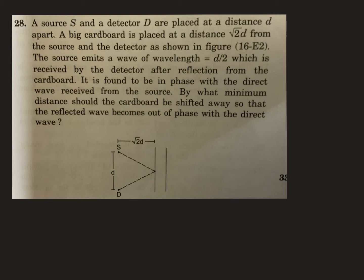which is received by the detector after reflection from the cardboard. By what minimum distance should the cardboard be shifted so that the reflected wave becomes out of phase with the direct wave, which is found to be in phase? So in the first case, Case 1, it is found to be in phase.